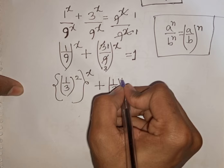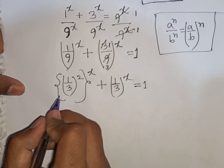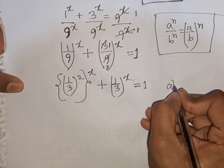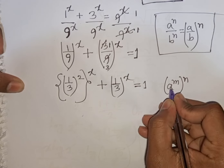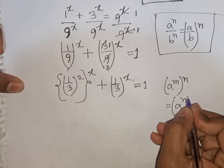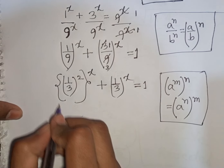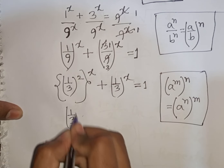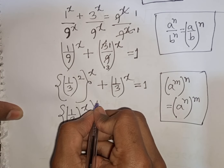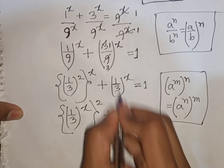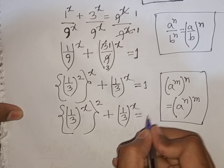So we have (1/3)^(2x) plus (1/3)^x equals 1. We can apply the rule (a^m)^n = (a^n)^m, rewriting (1/3)^(2x) as ((1/3)^x)^2. So the equation becomes ((1/3)^x)^2 + (1/3)^x = 1.